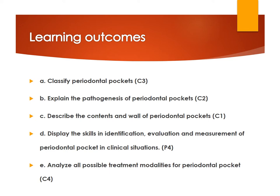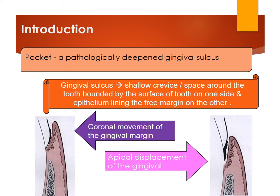Introduction — what is a periodontal pocket? It is a pathologically deepened gingival sulcus. The gingival sulcus is a shallow crevice or space around the tooth that permits the entrance of a periodontal probe, bounded by the tooth on one side and the epithelial lining of the free gingival margin on the other side. This pathologically deepened gingival sulcus — the periodontal pocket — can be due to the coronal movement of the gingival margin or the apical displacement of the gingival margin.